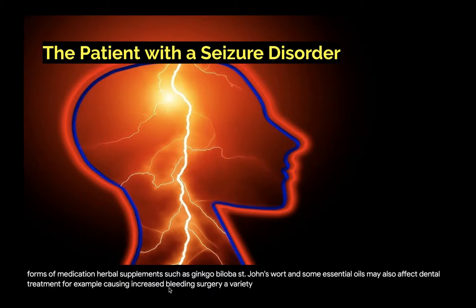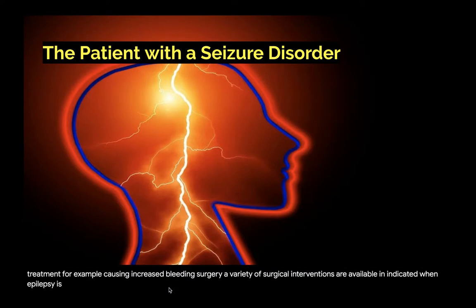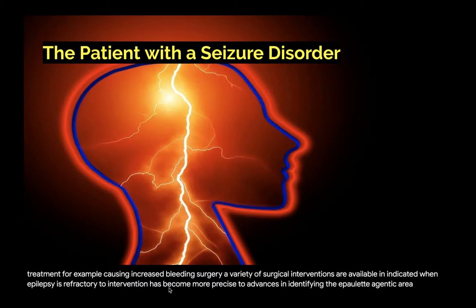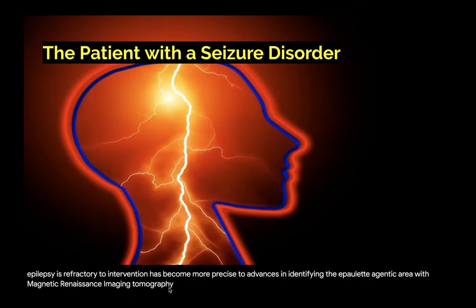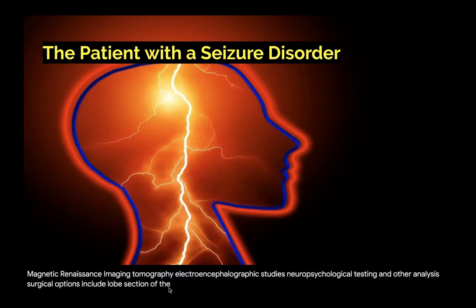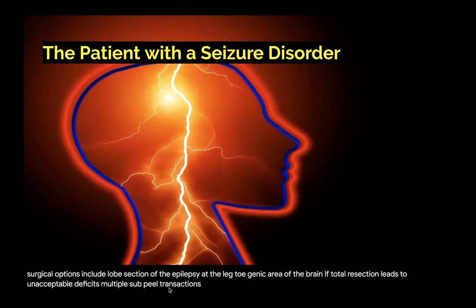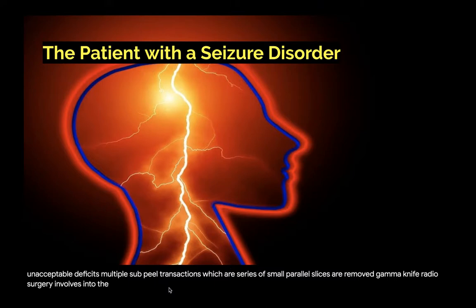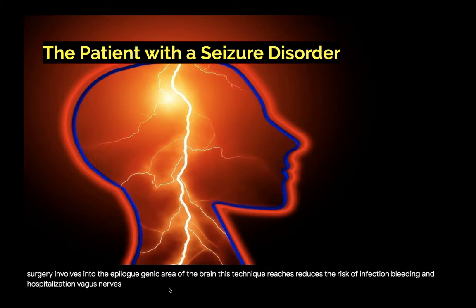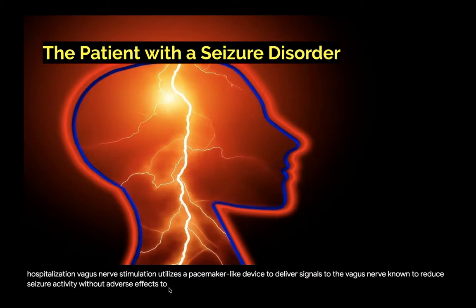A variety of surgical interventions are available when epilepsy is refractory to traditional AED therapy. Surgical intervention has become more precise through advances in identifying the epileptogenic area with MRI, tomography, electroencephalographic studies, neuropsychological testing, and other analysis. Surgical options include lobe resection of the epileptogenic area. If total resection leads to unacceptable deficits, multiple sub-pial transactions — a series of small parallel slices — are used. Gamma knife radiosurgery delivers a focused dose of radiation to the epileptogenic area, reducing the risk of infection, bleeding, and hospitalization. Vagus nerve stimulation utilizes a pacemaker-like device to deliver signals to the vagus nerve, known to reduce seizure activity without adverse effects.